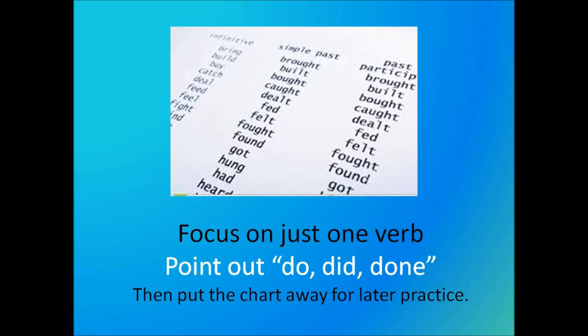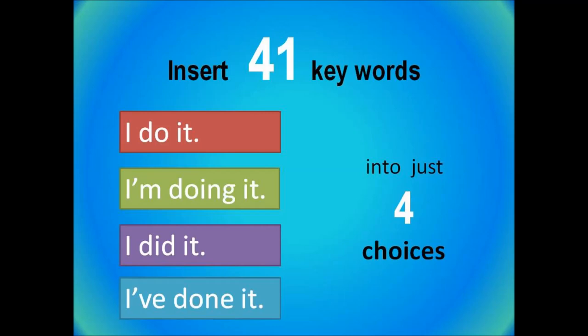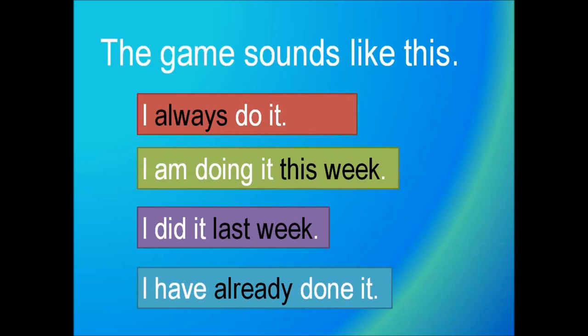So set aside that irregular verb chart for now and concentrate on one verb: do, did, done. Here's the verb to do conjugated in four tenses using first-person singular and affirmative voice. We want to keep it simple in order to practice speaking automatically. In later lessons you can use the same flashcards to practice conjugating negatives and questions and other irregular verbs, but that's not our goal today.